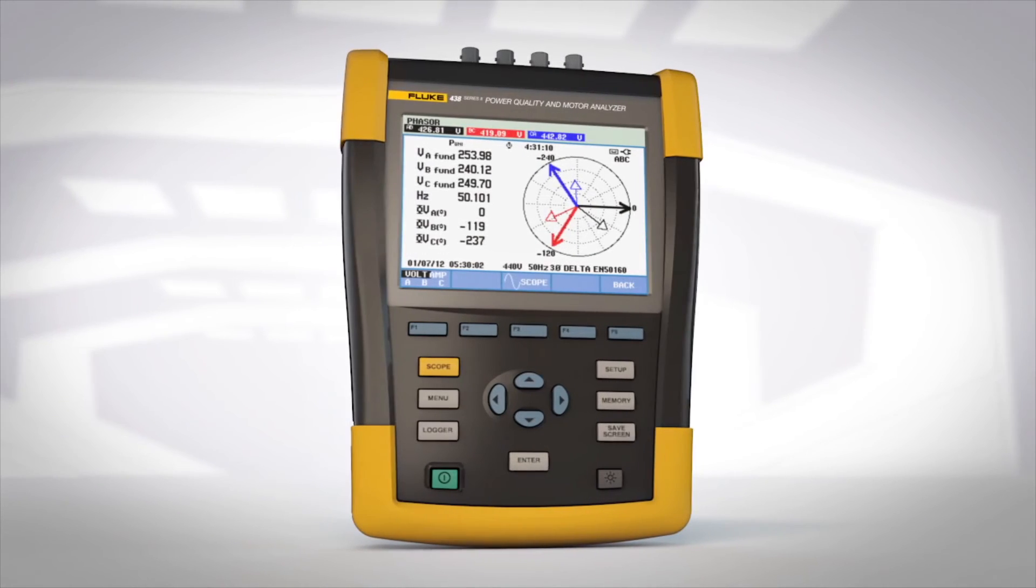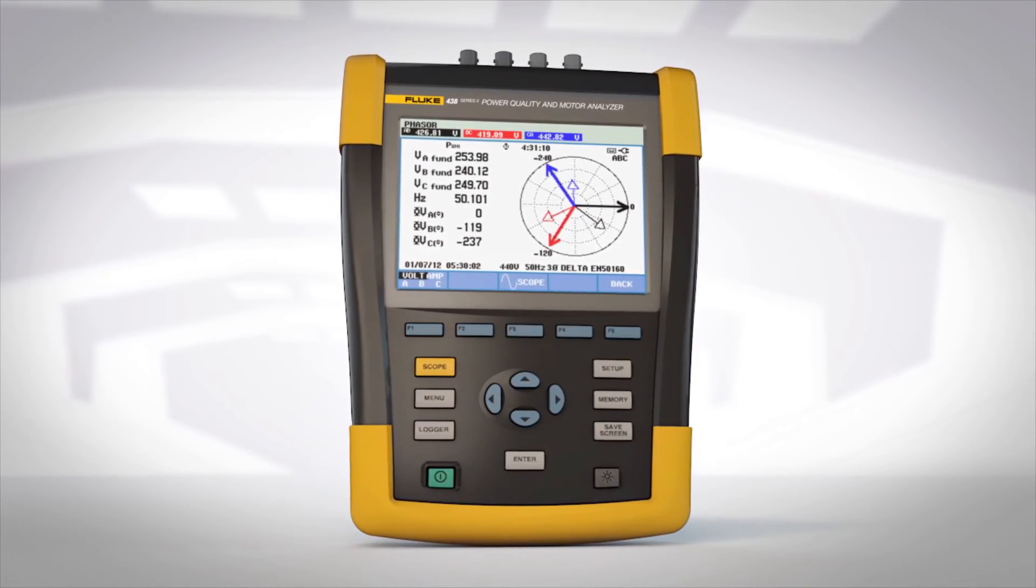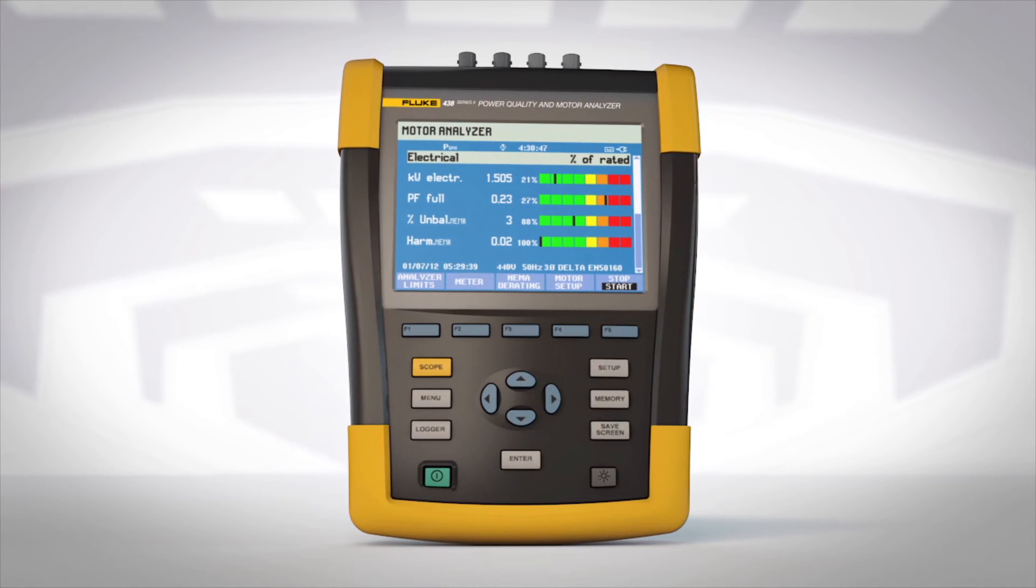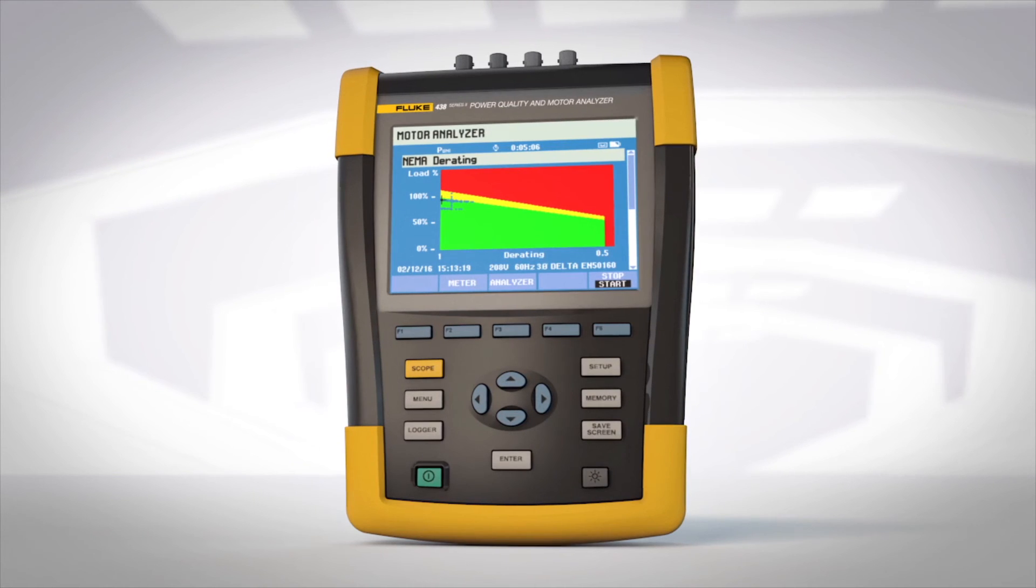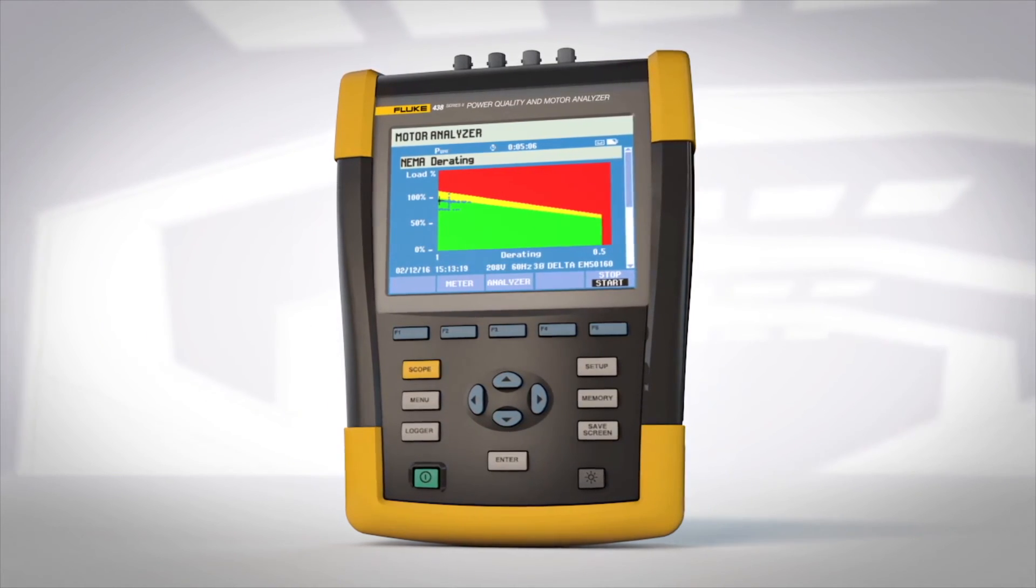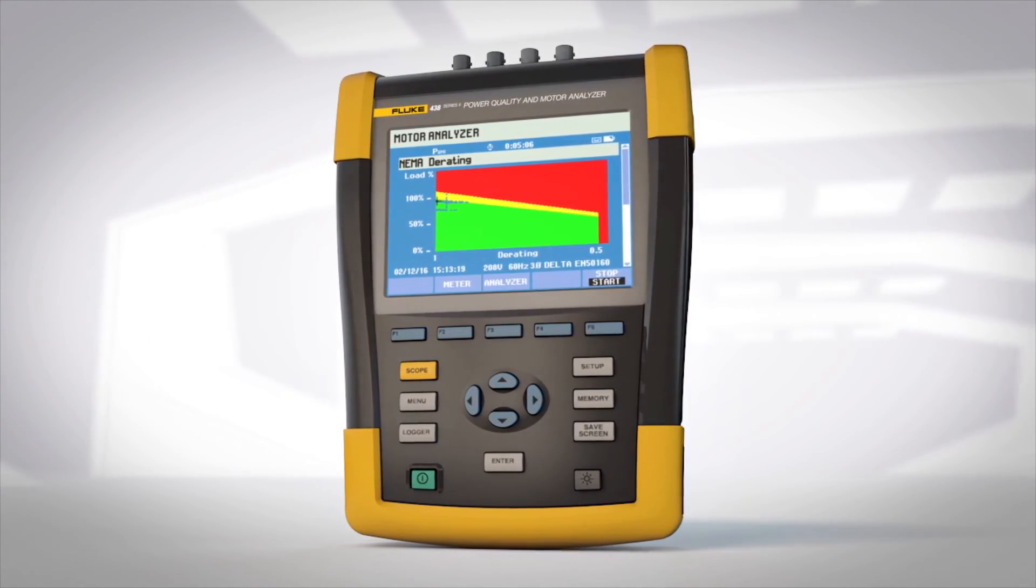With an intuitive user interface, optimized current probes and at-a-glance motor status screens, the Fluke 438 gives you the motor troubleshooting information you need to make better maintenance decisions and keep your plant up and running.